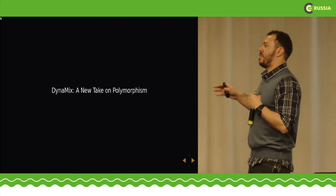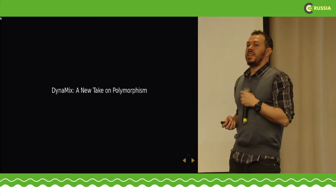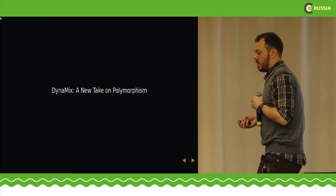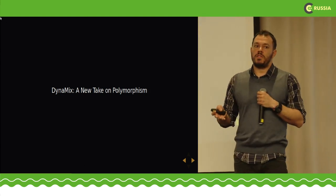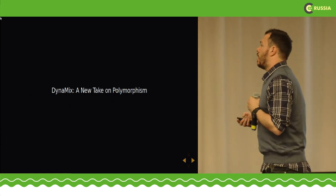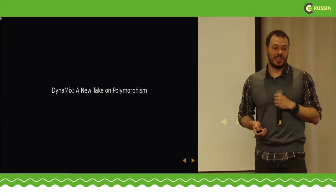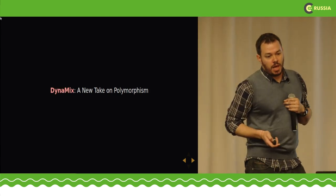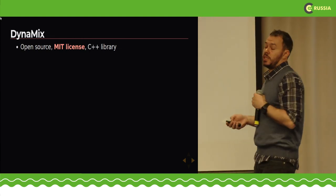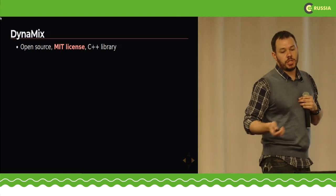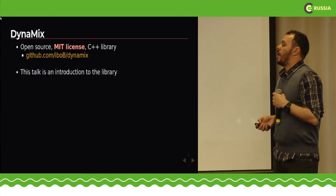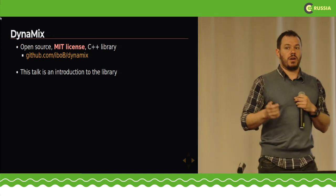Every single one of these pieces is basically not enough. There are jabs here and there trying to improve object-oriented programming in C++, but I don't know of a single complete solution that encompasses many features. Hence the title of my talk: the main part is Dynamics. Dynamics is a C++ library. It's open source, MIT licensed — so you can do whatever you want with it. You can find it easily on GitHub.